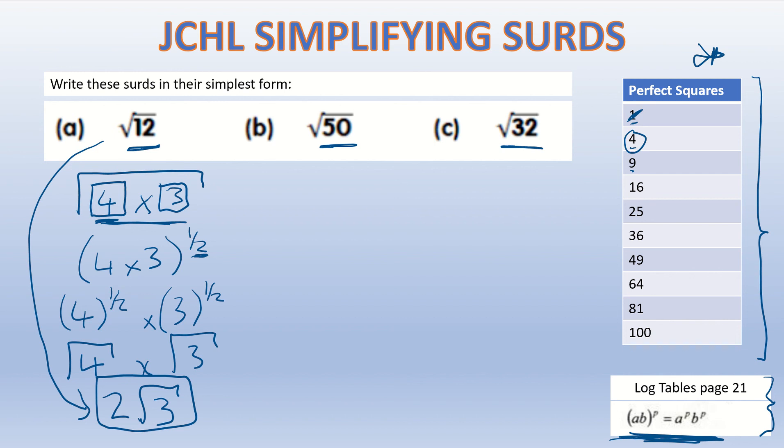For root 50 and root 32, I'm just going to show you as quickly as possible how you would simplify that. Root 50 again, square root, we want to break it up into two numbers so that one of those numbers is a perfect square. 4 doesn't go into 50, 9 doesn't go into 50, 16 doesn't go into 50, finally 25 goes into 50.